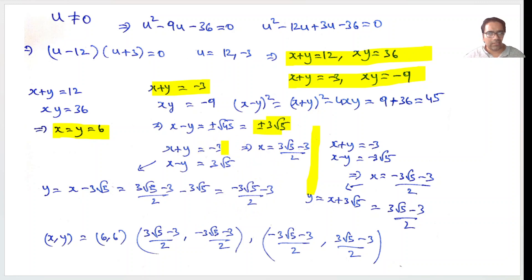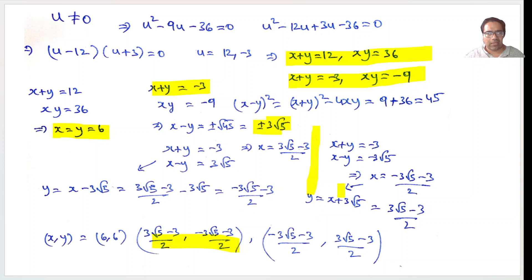For the first sub-case where x minus y equals 3 root 5: adding the equations gives x equals 3 root 5 minus 3 over 2, and y equals minus 3 root 5 minus 3 over 2. For the second sub-case where x minus y equals minus 3 root 5: x equals minus 3 root 5 minus 3 over 2, and y equals 3 root 5 minus 3 over 2. So basically we have a set of three solutions total.